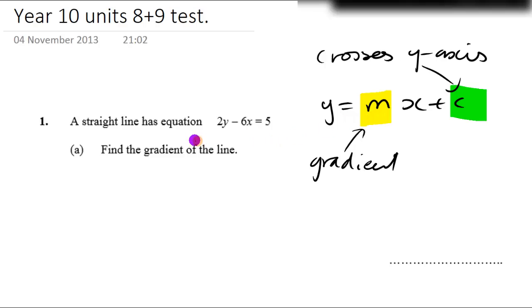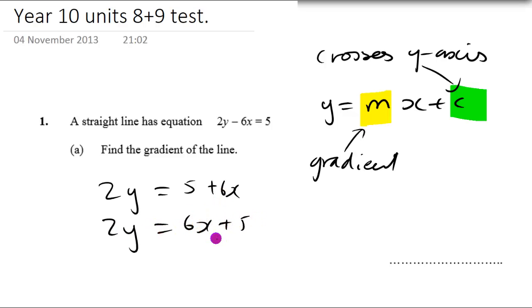So what we need to do is make y the subject—we need to get y on its own. Let's add 6x to both sides and we get 2y equals 5 plus 6x. Well, we like to have the x first, so let's change the order: 2y equals 6x plus 5. Divide by 2, so 2y divided by 2 is y, 6x divided by 2 is 3x, and 5 divided by 2 is 2.5.